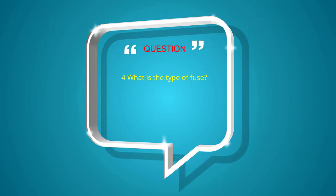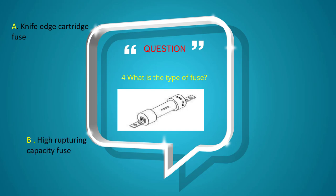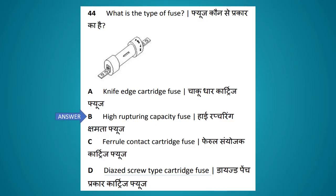What is the type of fuse shown? Options: knife edge cartridge fuse, high rupturing capacity fuse, ferrule contact cartridge fuse, diazed screw type cartridge fuse. The answer is high rupturing capacity fuse.